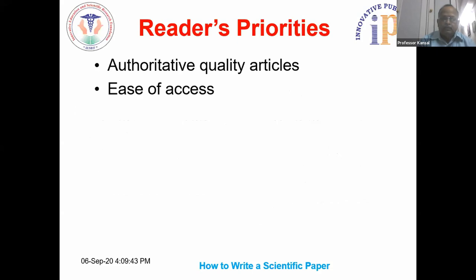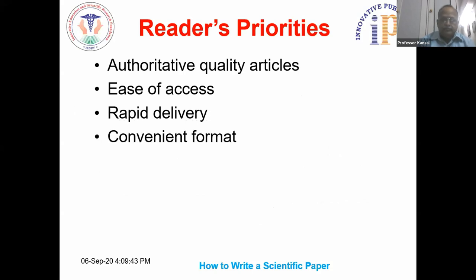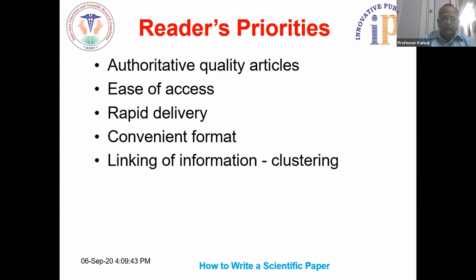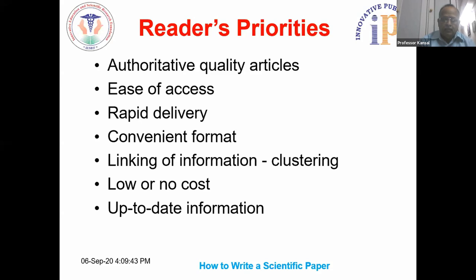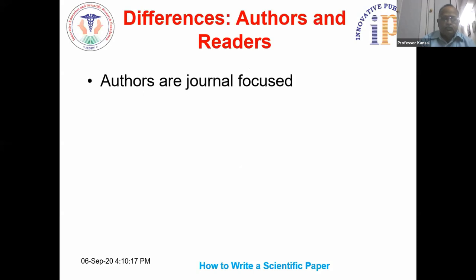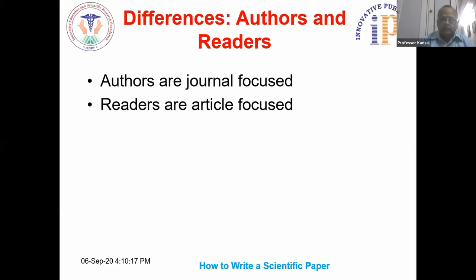For the reader, the article should be of very good quality, access should be easily available, delivery should be rapid, and the publication should be in a convenient format. There should be linking of information, cost should be very low or freely available, and the information should be up to date. Authors are usually journal-focused — looking for a good journal — while readers are article-focused, concerned with what is available as content. Thus, authors want to publish more and readers want to read less.